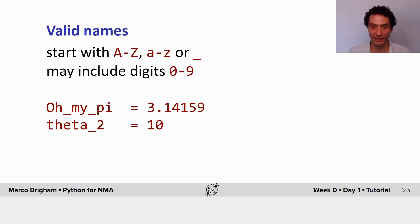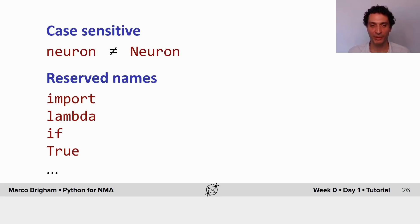Now, Python names, variable names, they have some rules. So they have to start with capital A to capital Z, lowercase a to lowercase z, or an underscore. And they may include digits, such as from 0 to 9. So here below, you have two examples of variables and their values. Now, variable names in Python are case sensitive. Lowercase neuron is a different variable from uppercase neuron. And there are some reserve names, such as import, lambda, if, true, and a few others. You'll learn by using them later on.